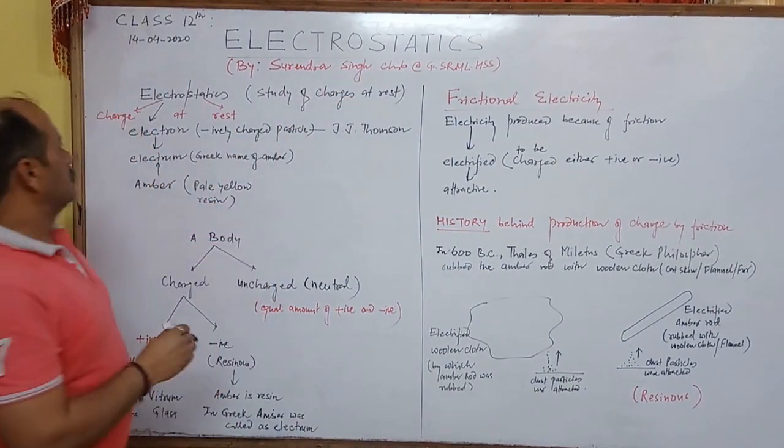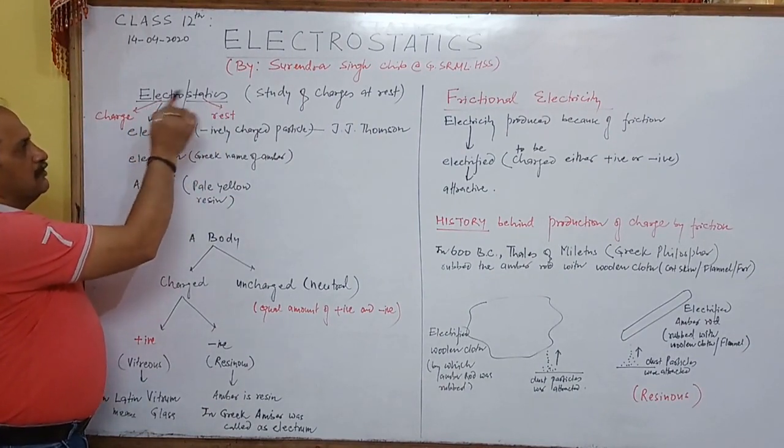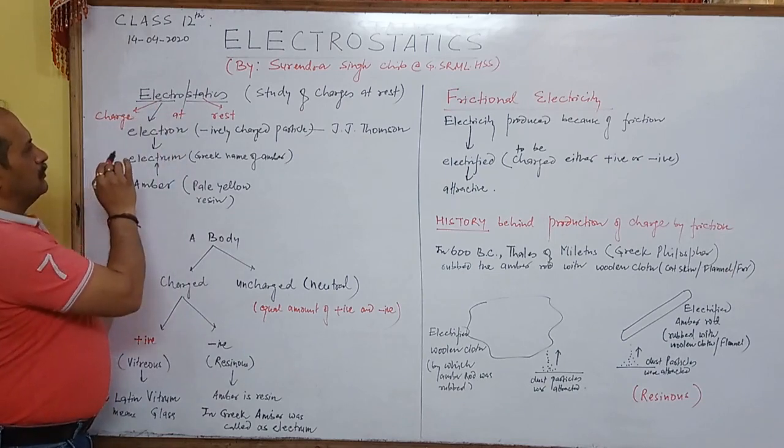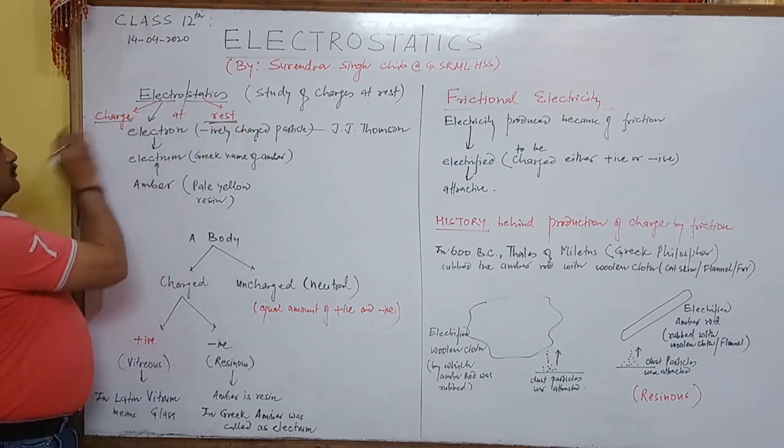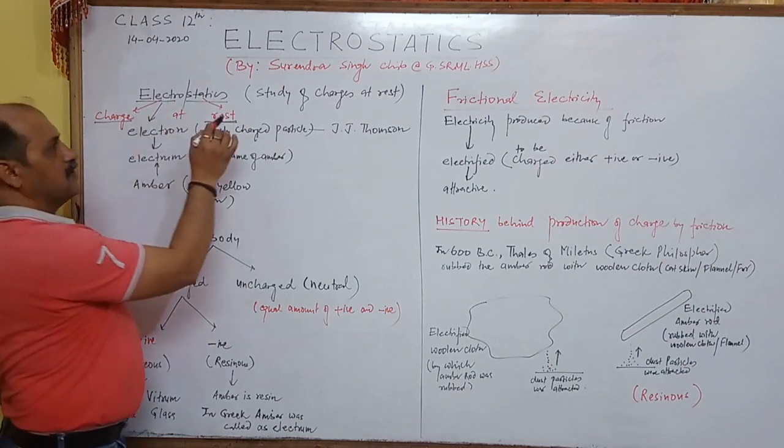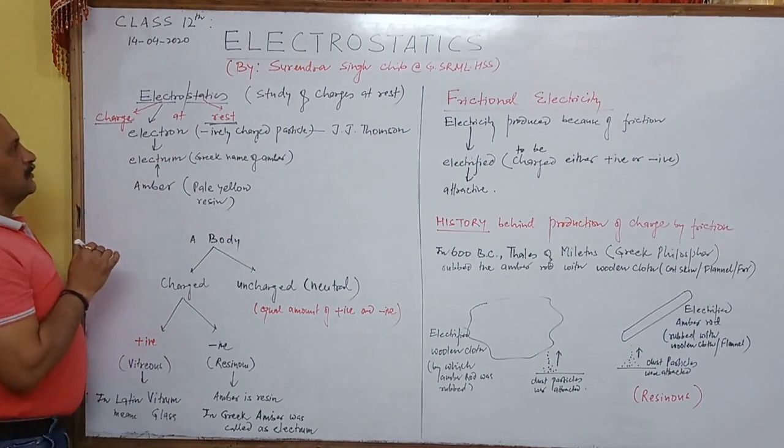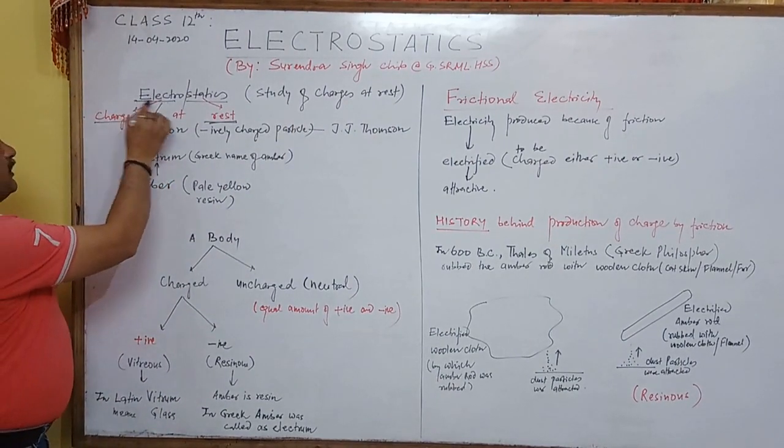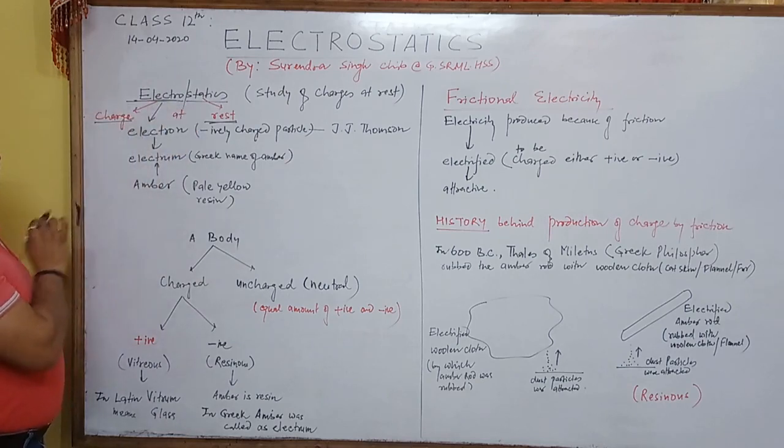Electrostatics. See it is made of two words, Electrostatics. What do you mean by Electro? Statics is Rest. Electro means Charge. It means, in this lesson we will study, Charge is at Rest. Now there is a history behind it. Why we are using the word Electro? From where we get it?